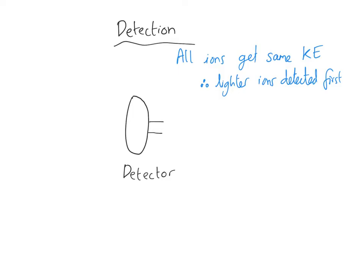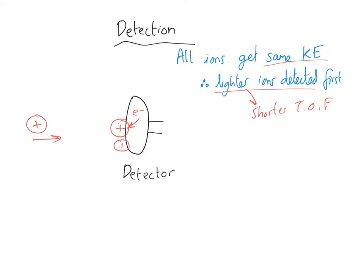All ions get the same kinetic energy, meaning lighter ions are detected first — they have a shorter time of flight, which is where the name 'time of flight mass spectrometer' comes from. The ions drift towards the detector; when positive ions hit it, they pick up electrons from the detector, causing a current to flow. If a particular ion is very abundant, more electrons move and we get a greater current. So a larger current indicates greater abundance of that ion in the sample.